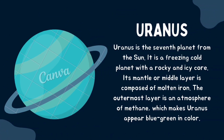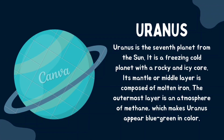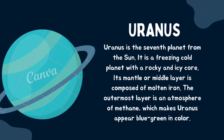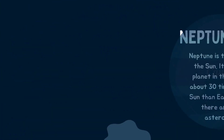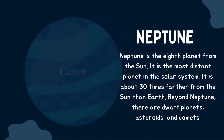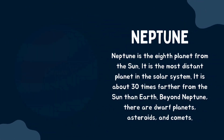The next planet is Uranus. Uranus is the seventh planet from the sun. It is a freezing cold planet with a rocky and icy core. Its mantle, the middle layer, is composed of molten iron. The outermost layer is an atmosphere of methane, which makes Uranus appear blue and green in color. So it is also known as the blue or green planet.